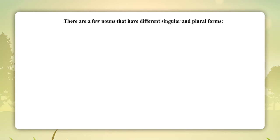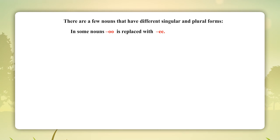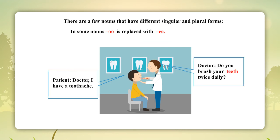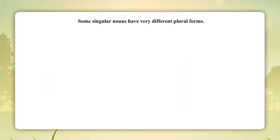There are a few nouns that have different singular and plural forms. In some nouns, the double 'o' is replaced with double 'e'. Patient: 'Doctor, I have a toothache.' Doctor: 'Do you brush your teeth twice daily?'